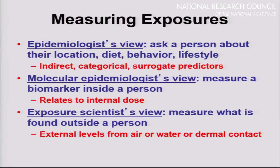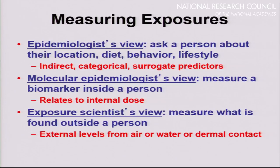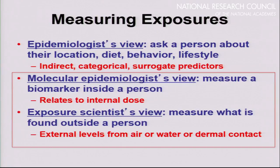When we measure exposures, there are three different views. There's the epidemiologist view, largely based on questionnaires — largely indirect or categorical. We want to elevate that and bring in something more precise. That's either the molecular epidemiologist view, who wants to know about biomarkers inside of you — what Steve called the blood exposome — or the exposure scientist view, who wants to measure external levels from air, water, or dermal contact. What metabolomics can do is get answers to both: we call it environmental metabolomics for exposure science, and regular metabolomics for the molecular epidemiologist viewpoint, using largely the same tools and techniques.